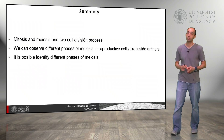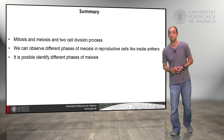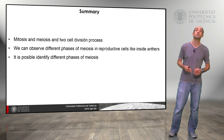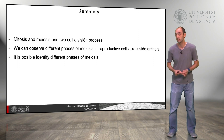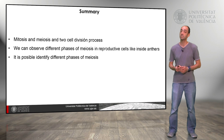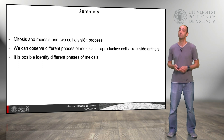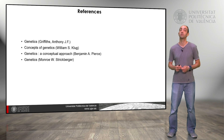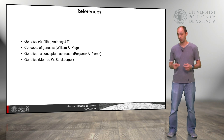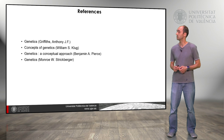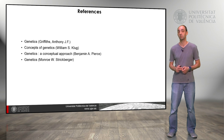As a summary, we can see that mitosis and meiosis are two cell division processes. We can observe different phases of meiosis in reproductive cells like inside anthers, and it is possible to identify different phases of meiosis by watching anthers in different stages of development. With that we finish this object. Here we have different references that you can use to look deeper into this subject, and with that we finish. Thank you very much.